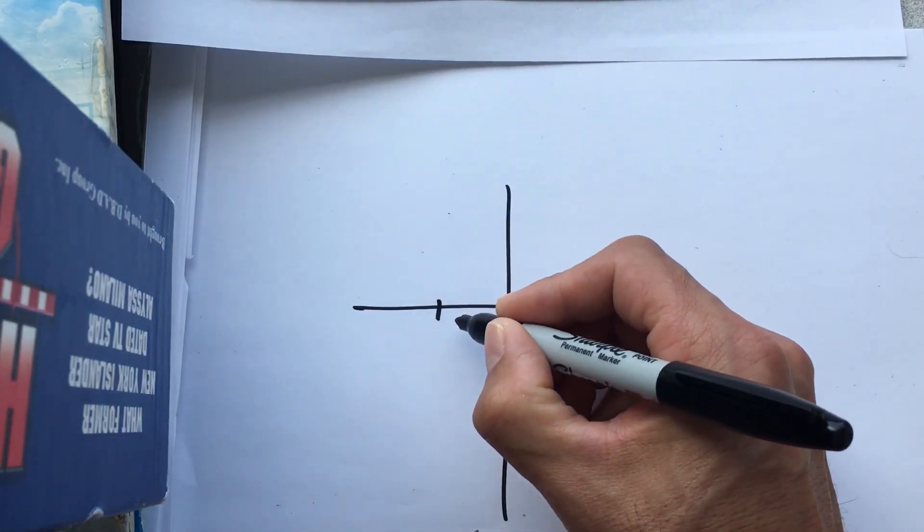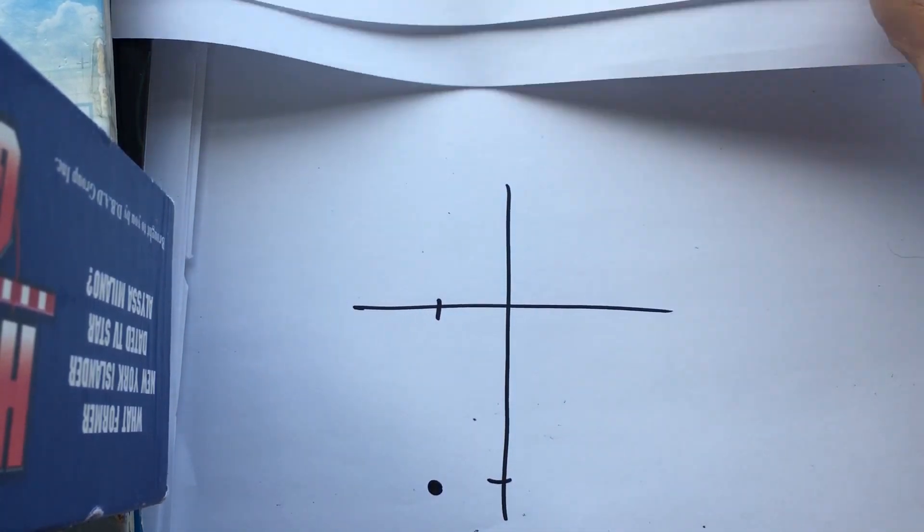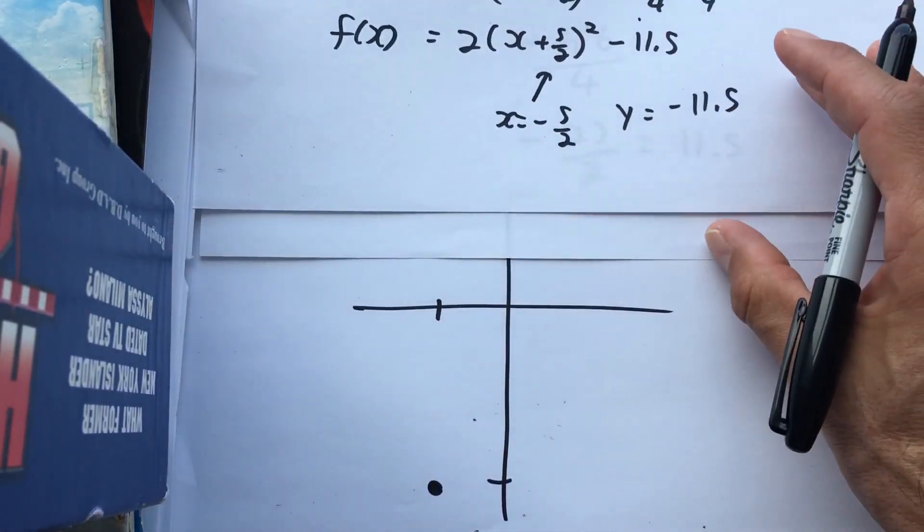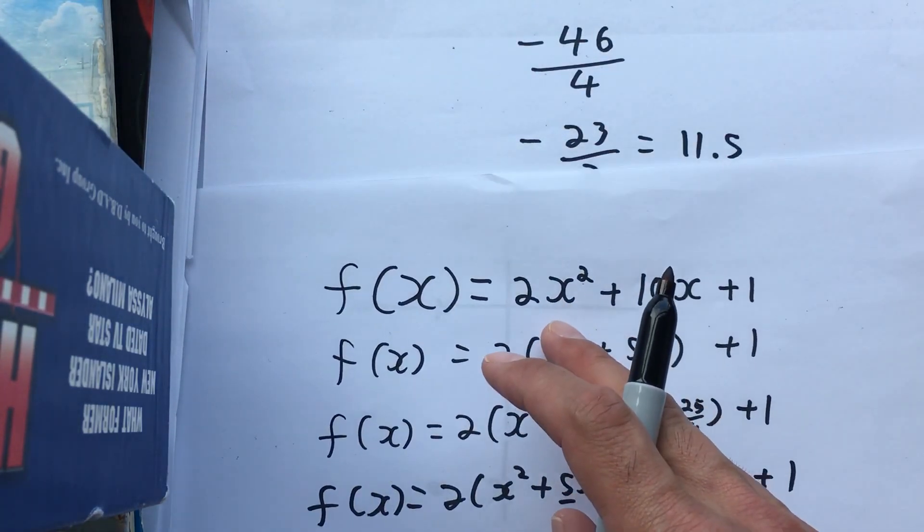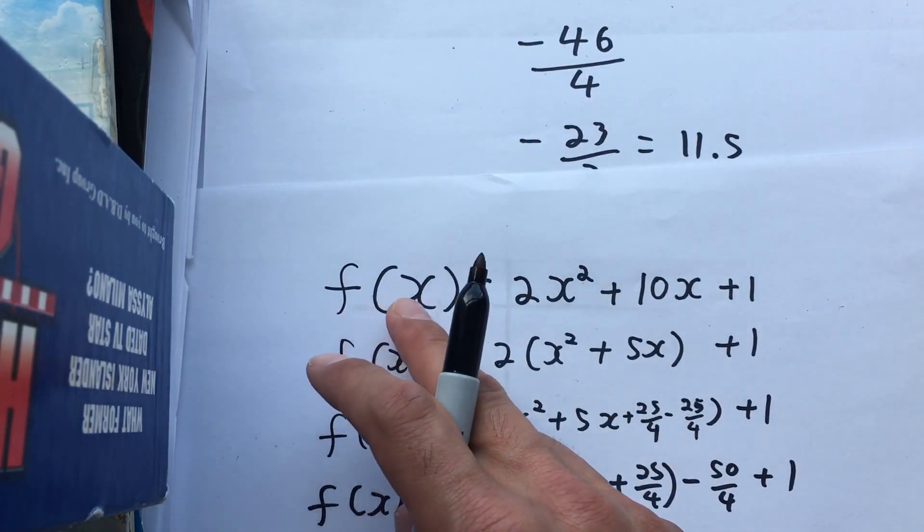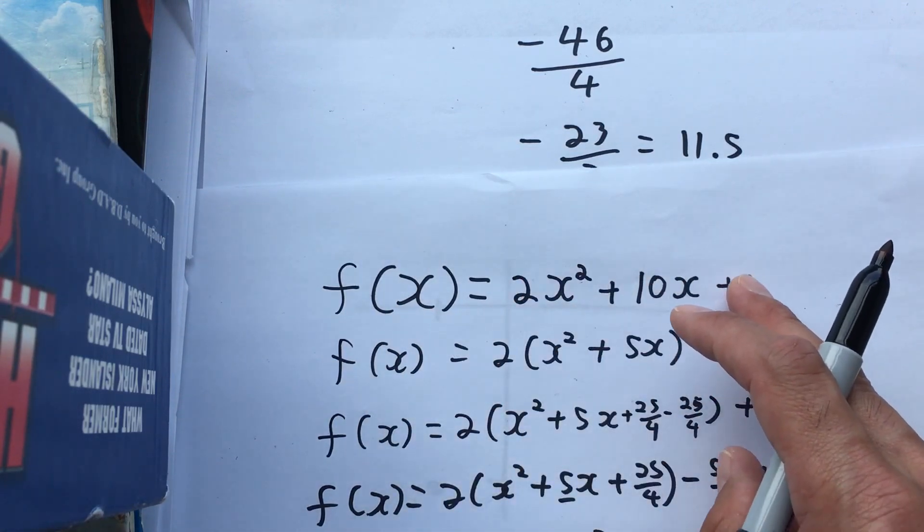So that's negative 2.5, that's negative 11.5, that's the location of the vertex. And for one more point here, and if we go to the top, that makes it easiest. If x is 0, just erase both of these terms, and you're left with a 1.